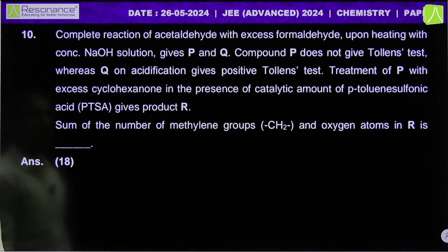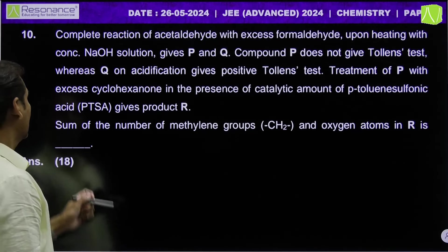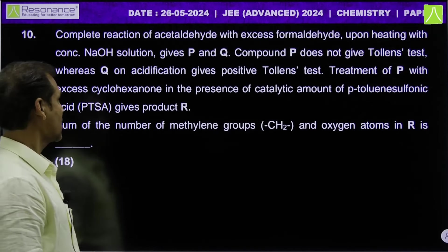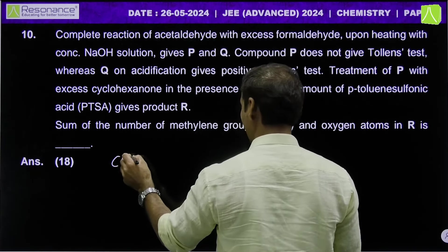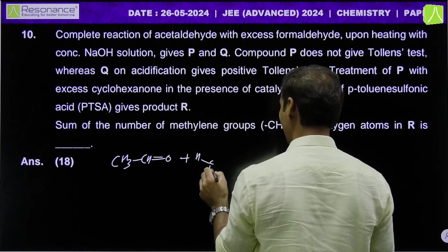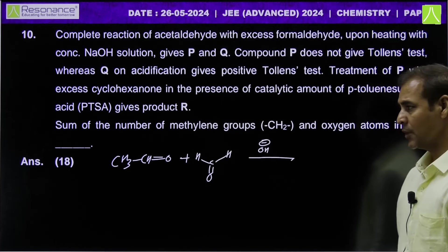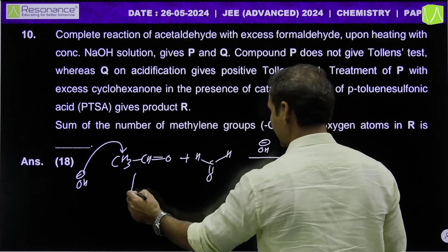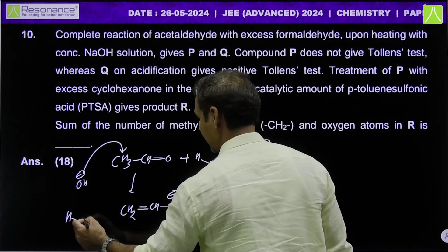Let's take another organic question — asked previously in IIT JEE Advanced. Complete reaction of acetaldehyde with excess formaldehyde: when alpha-hydrogen-containing carbonyl compounds are taken in alkaline medium with NaOH or KOH, aldol reaction occurs. OH- takes the alpha hydrogen of acetaldehyde, forming an enolate, which does nucleophilic addition on formaldehyde.